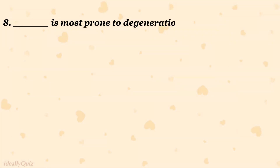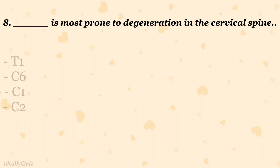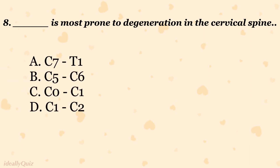Which level is most prone to degeneration in the cervical spine? A. C7-T1, B. C5-C6, C. C0-C1, D. C1-C2. The correct answer is B. C5-C6.